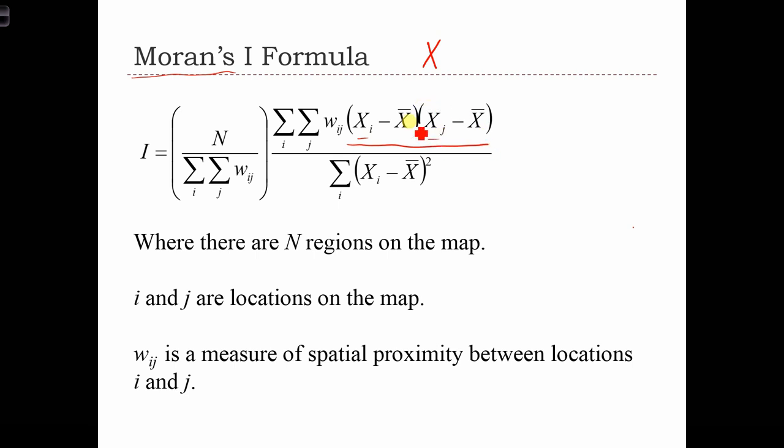then we're going to have negative cross-product terms. Or vice versa, if xi is low and xj is high. In all of these cases, we're only going to consider pairs of locations, i and j, that are neighboring one another.